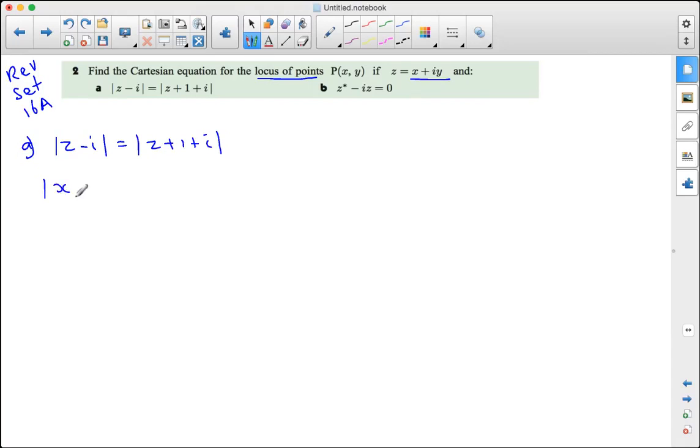So we have |x + iy - i| equals |x + iy + 1 + i|.